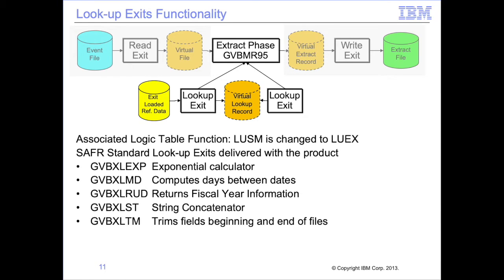Certain modules are delivered with the product called SAFIR standard lookup exits. These perform a common set of functions not in native SAFIR. For example, GBB-XL-EXP is an exponential calculator — if passed a number and an exponent format, it will perform the calculation. GBB-XL-MD accepts two dates and computes the days between those dates. GBB-XL-RUD returns the SAFIR fiscal year data passed in through the VDP. GBB-XL-ST accepts strings, concatenates them, and returns a single string value. GBB-XL-TM performs trim functions against passed string parameters.